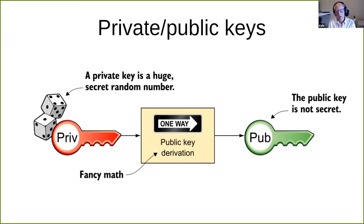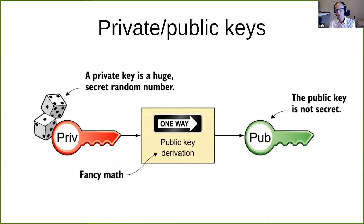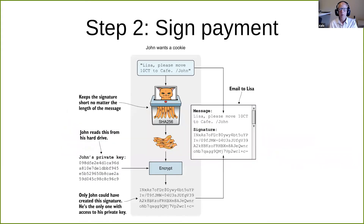The public key is derived from the private key through a one-way function — some fancy math. It's very important that this function is one-way because you don't want to be able to get the private key from a public key. The private key is private, the public key is public. So let's go to the second step of this process: signing a payment.